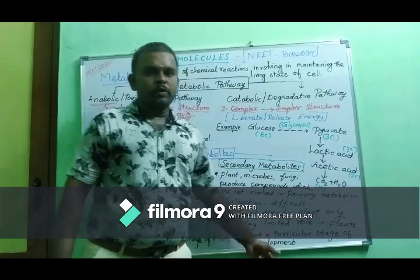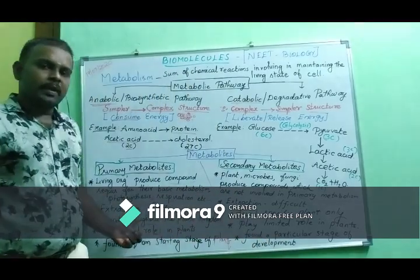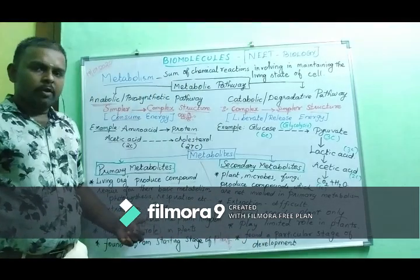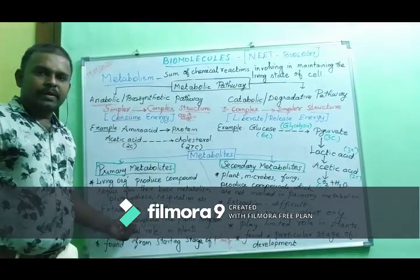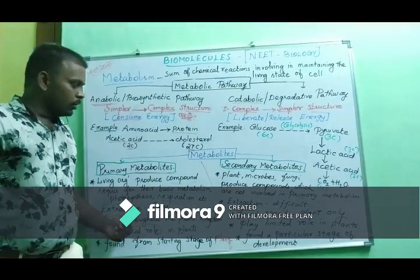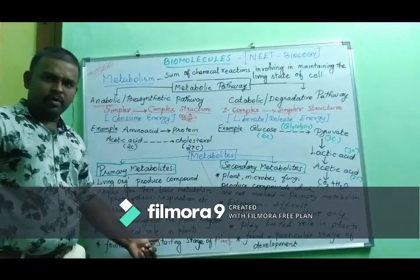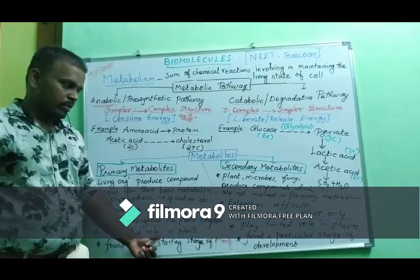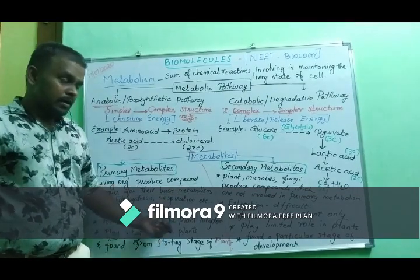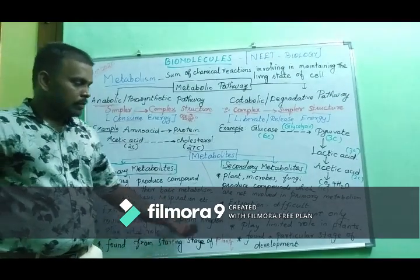Secondary metabolites appear later in development. Examples of primary metabolites include biomolecules such as lipids, proteins, amino acids, carbohydrates — these are important small molecules and macromolecules.